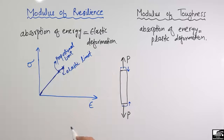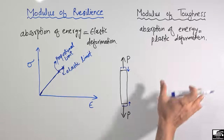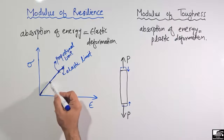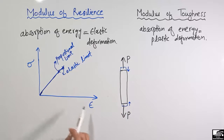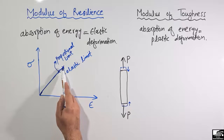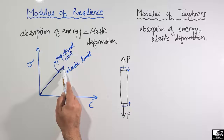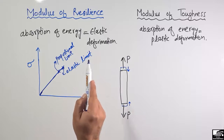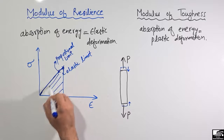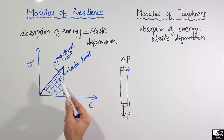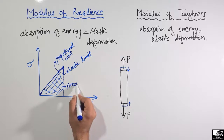Now, after the elastic limit, I will define things using another graph for the modulus of toughness. When you apply the load, stress and strain increase with time. The first stage is the proportional limit where stress and strain are directly proportional. After this, there is an unproportional limit, but the material can still be in the elastic stage — meaning it can return to its original position after removing the load. The energy stored up to this elastic limit stage is known as the modulus of resilience.